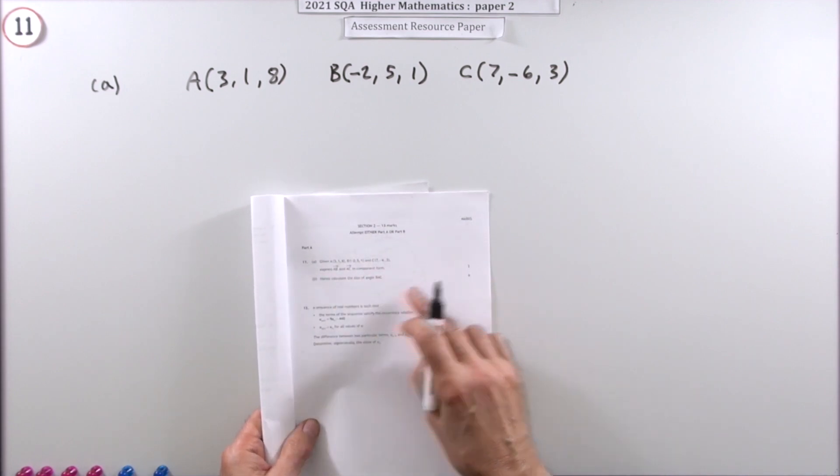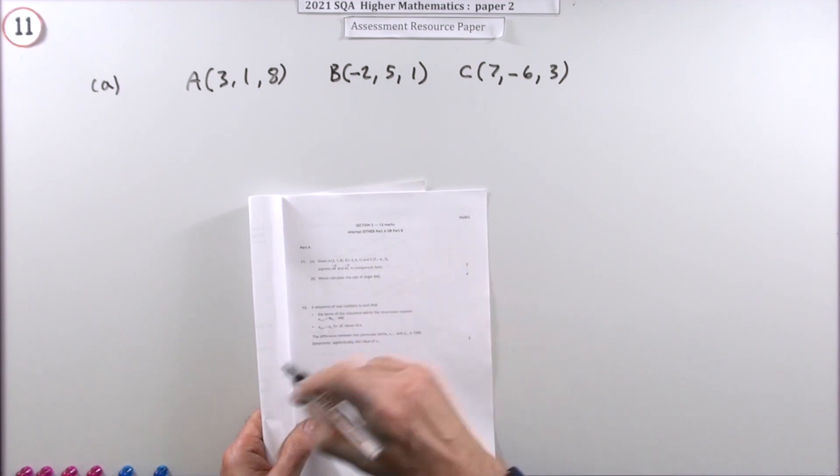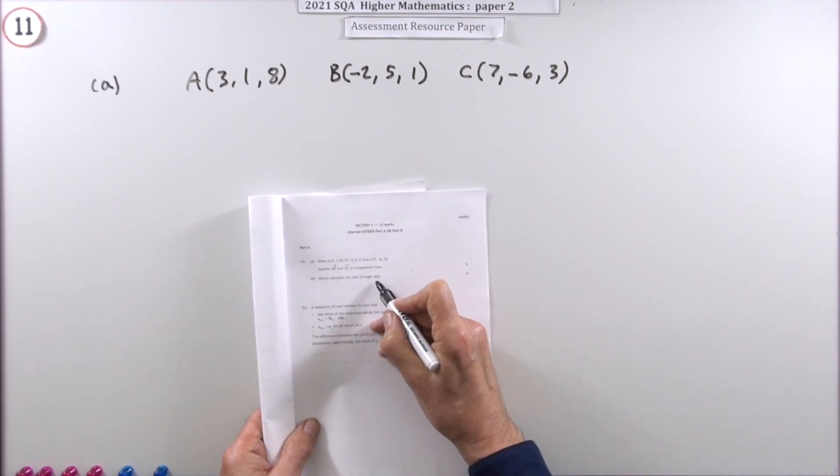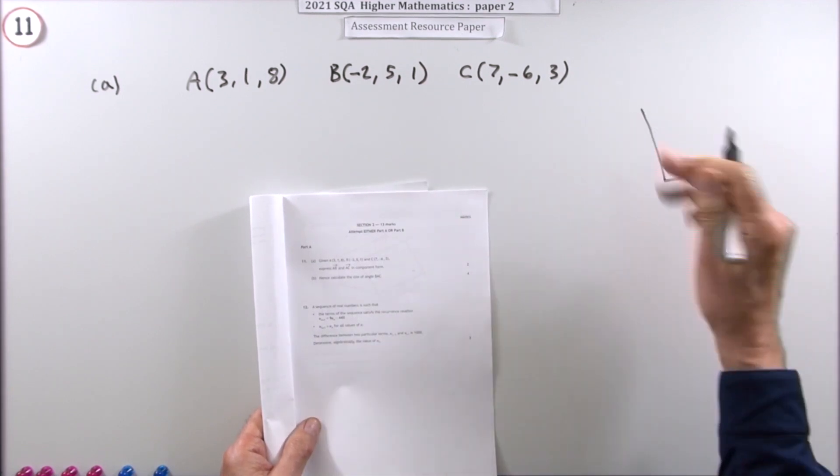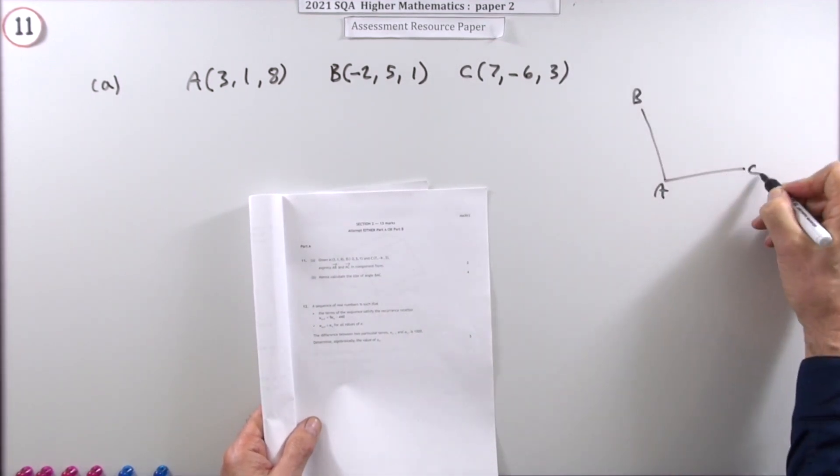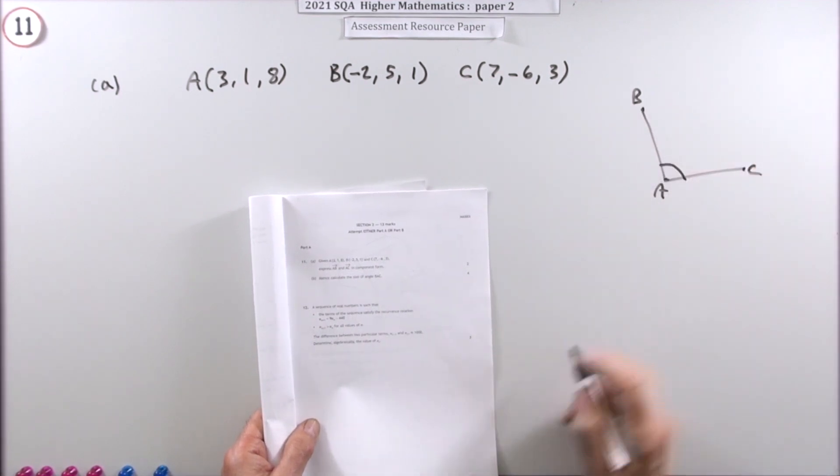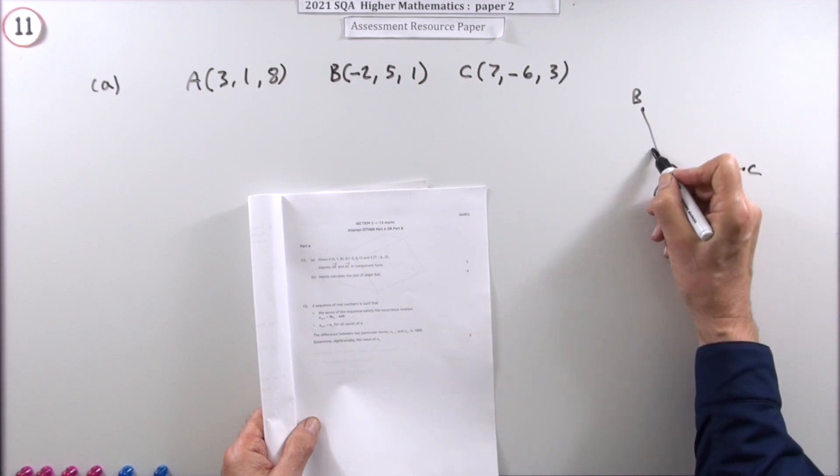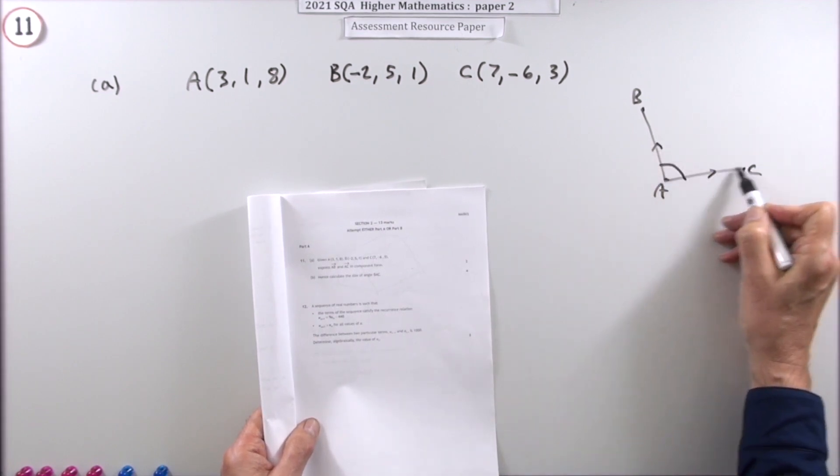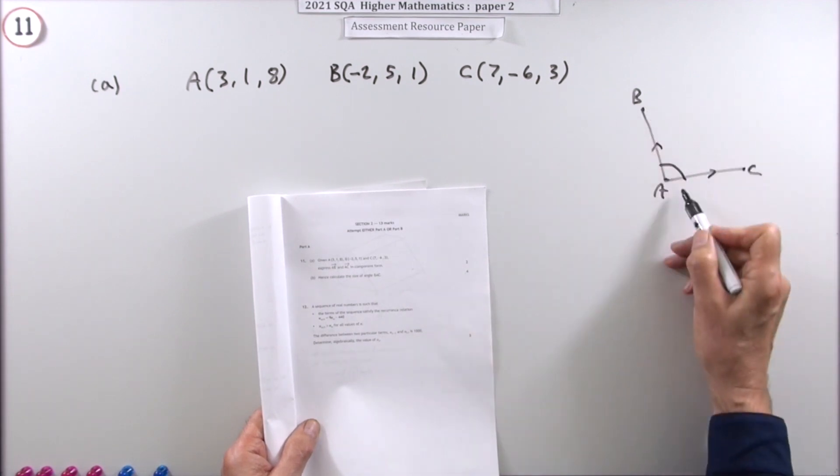It's a fairly standard vectors question. Calculate the size of an angle between two lines lying in three-dimensional space. It says specifically, I know this is part B but this is what it all leads to. Calculate the size of angle BAC. Now I don't know what they look like in space because you can take different orientations and see it different ways. But B, A, C, if you were to connect them would look like this. So this is the angle that they want and the way that you find that is you use a scalar product.